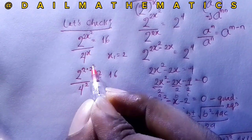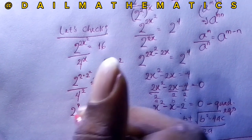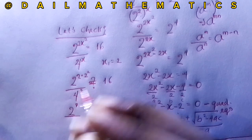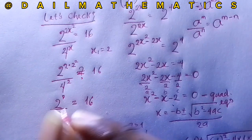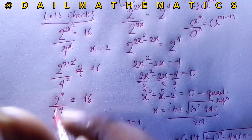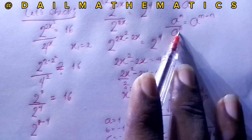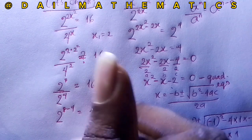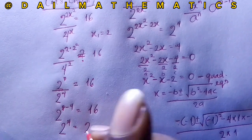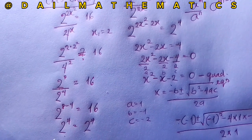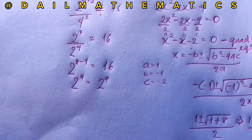In the denominator, 4 equals 2 squared, so 4 raised to the power of 2 equals 2 raised to the power of 4. Applying the division law, the exponent becomes 8 minus 4 equals 4. So we get 2 raised to the power of 4, which is 16. This confirms x equals 2 is correct.